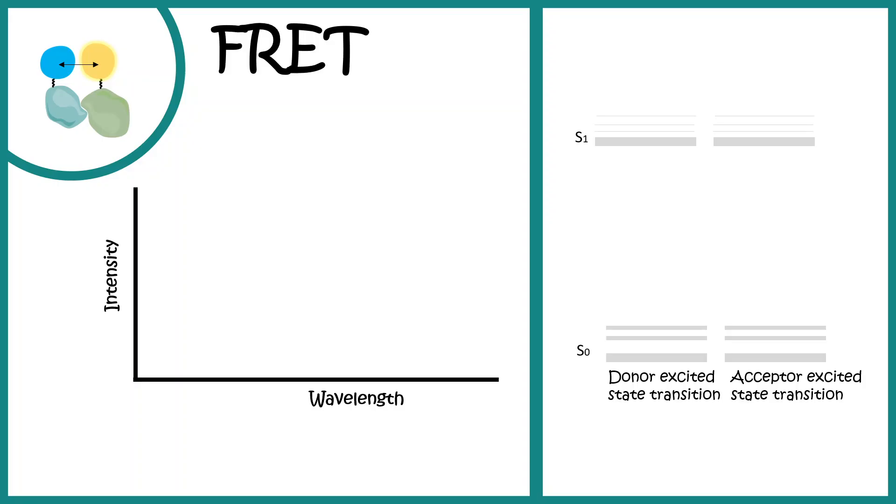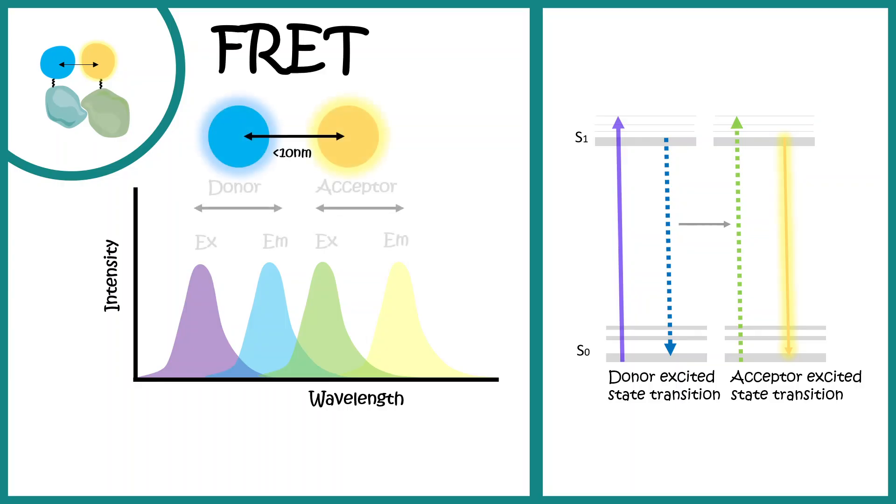Now let's understand the Jablonski diagram and the excitation and emission spectrum for FRET. Here is the excitation wavelength. Obviously, the electrons would jump up to a higher excitation state. Then it should be an emission in a radiative fashion. But when the two molecules are in close proximity, there would be a FRET transfer, and thereby the fluorescence would be observed at a very higher wavelength. In this case, the wavelength would be corresponding to YFP. We have stimulated the cyan fluorescence protein and we are getting a fluorescence corresponding to the yellow fluorescence protein. This is how we can understand the FRET diagram or the Jablonski diagram for FRET.